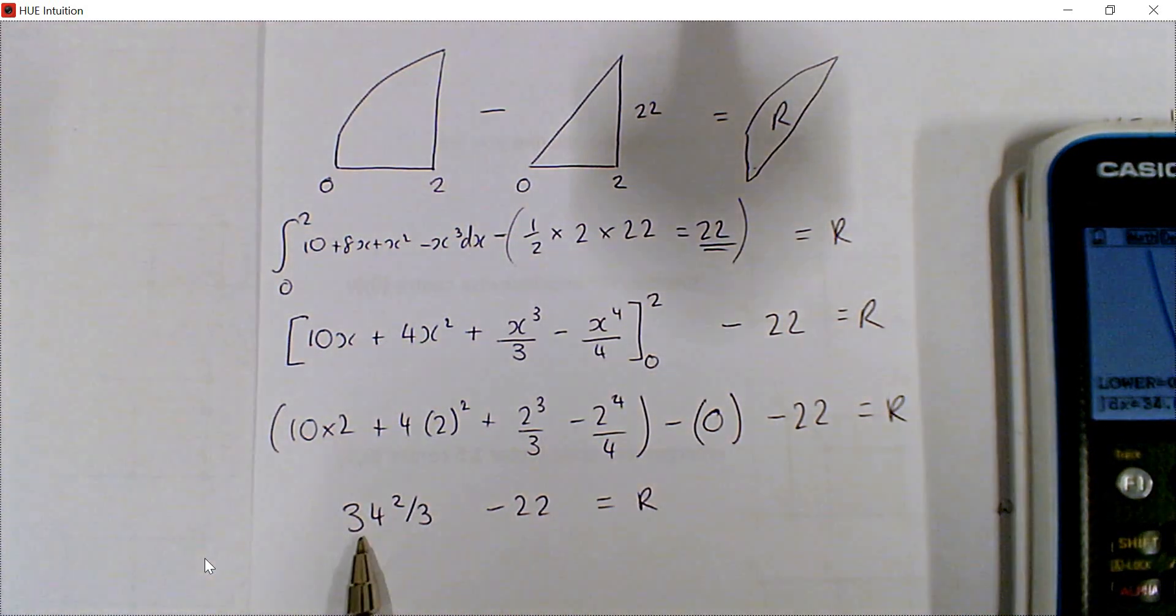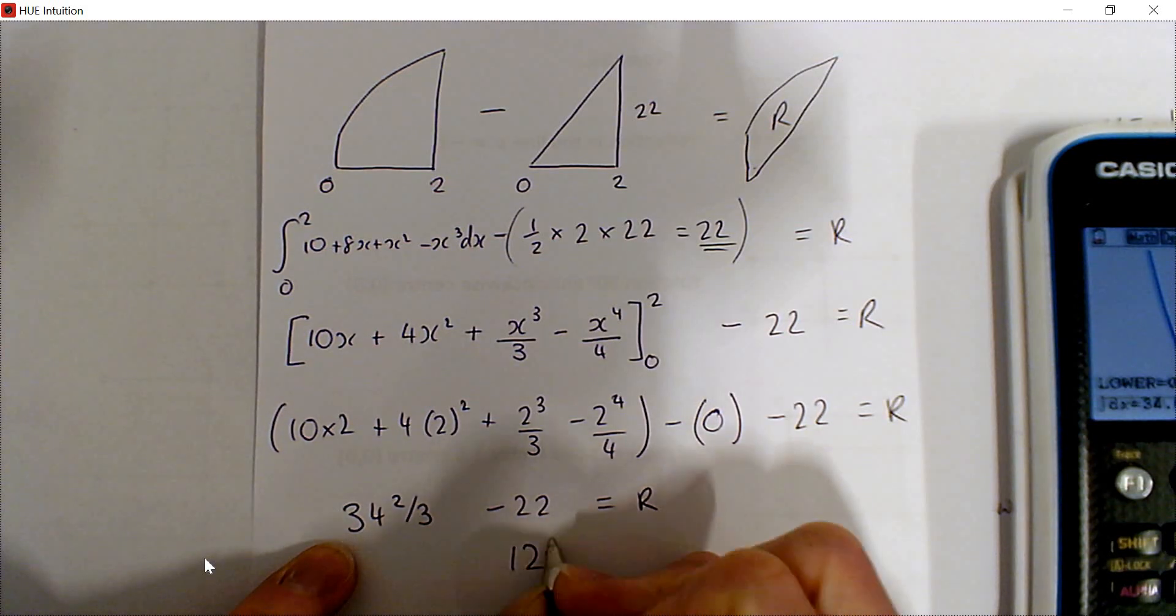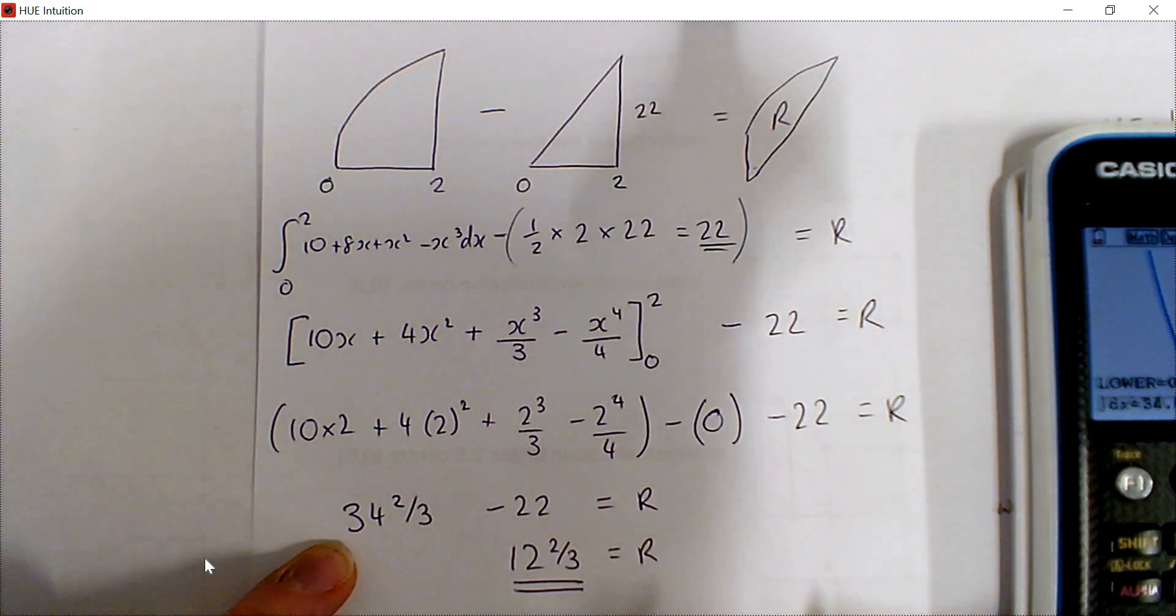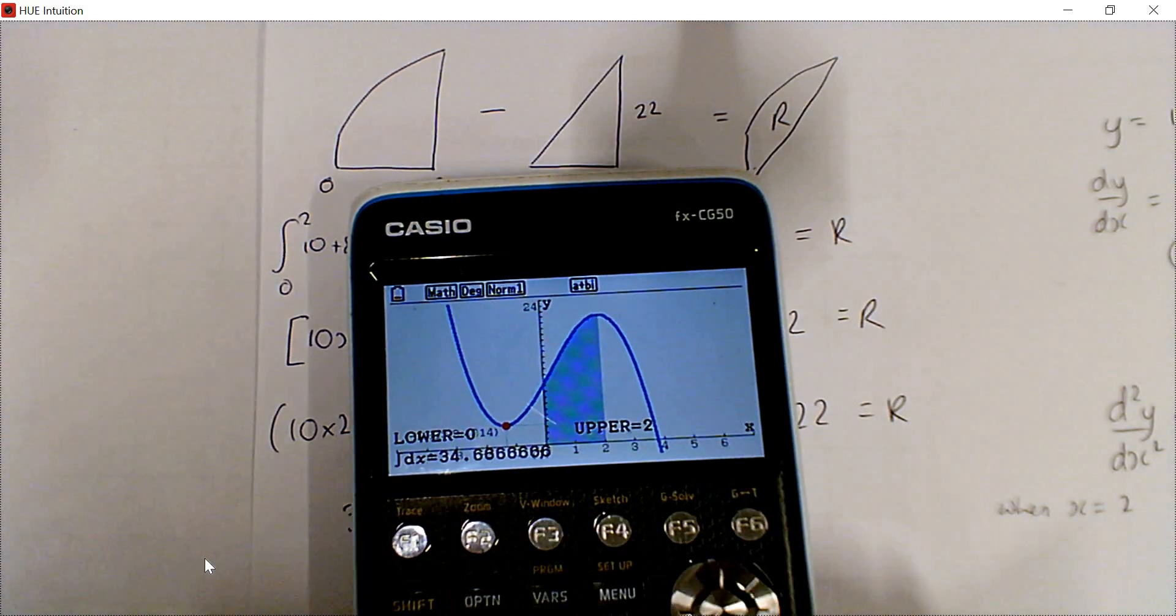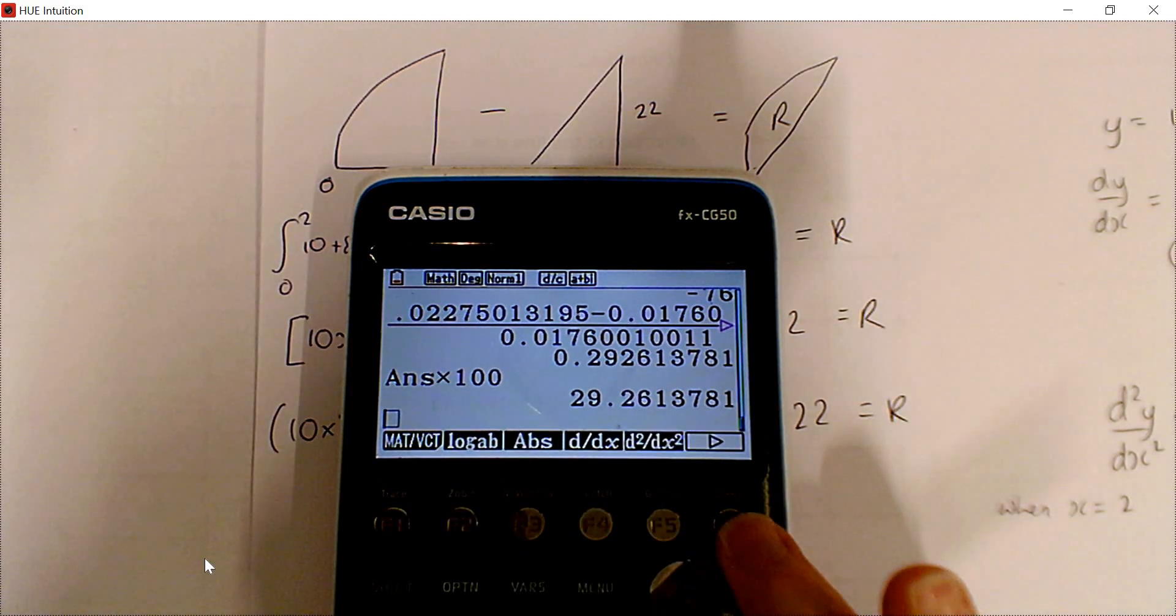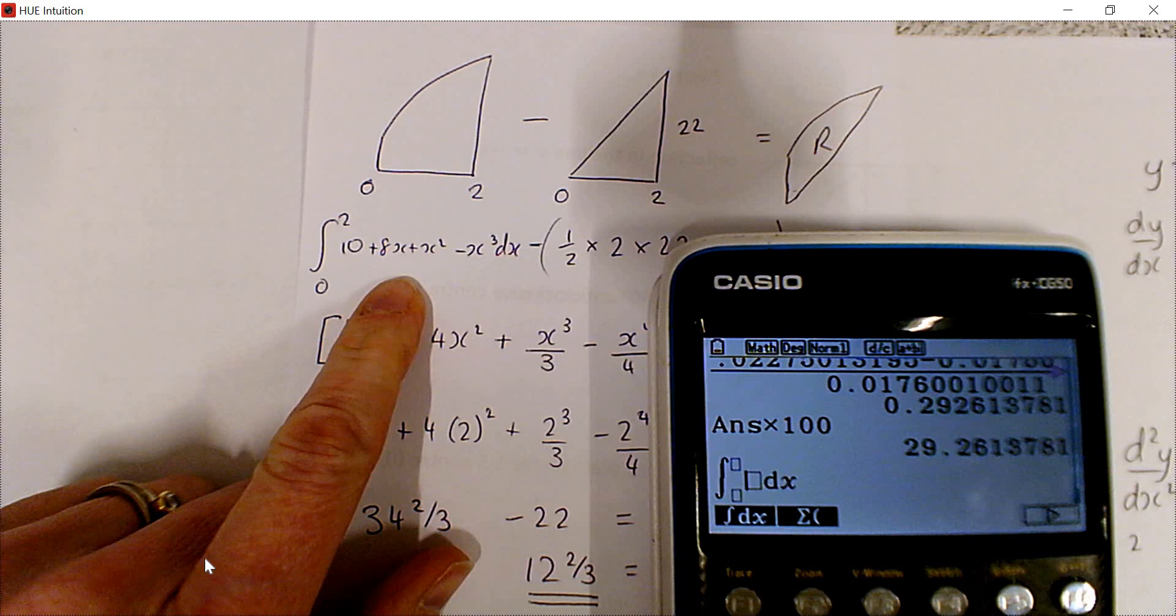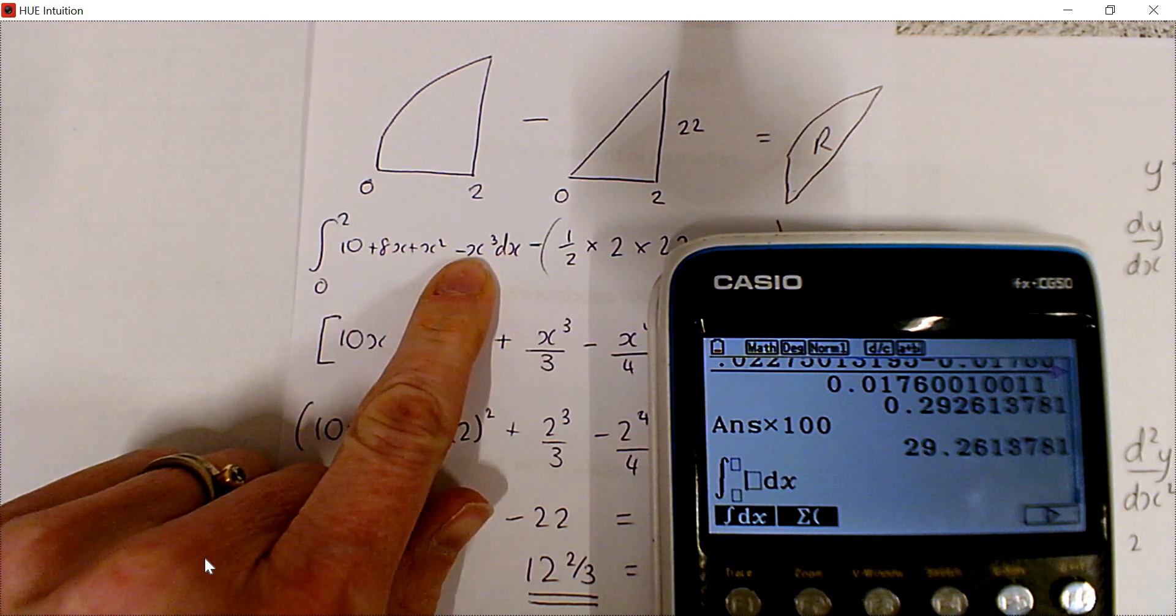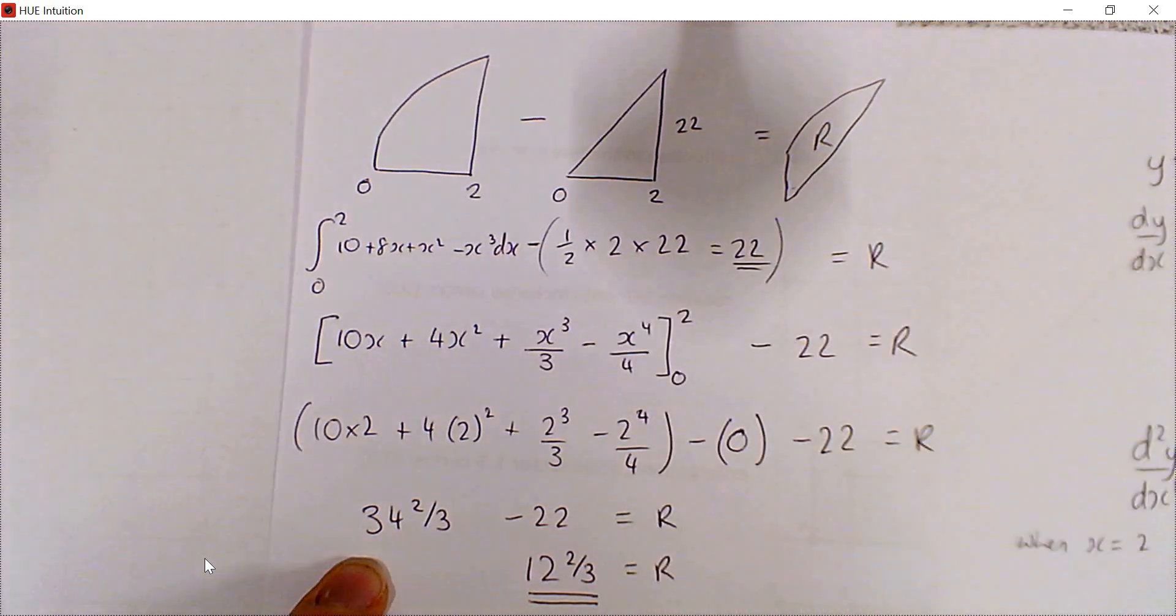So then we can do 34 and 2 thirds take away 22. That's going to give us 12 and 2 thirds for R. You could give it as a top-heavy fraction if you prefer. If you prefer for integrating, if you went to the Run menu, you can use math and then there's the interval there. You can type in the original thing that you wrote down for the area here, and it should give you the same answer for 34 and 2 thirds.